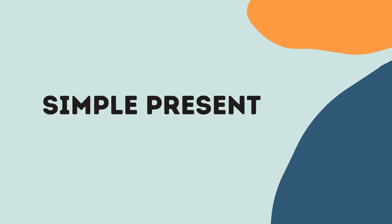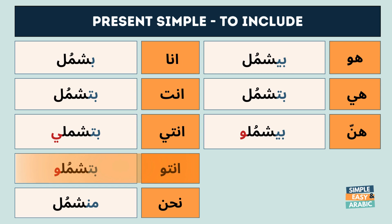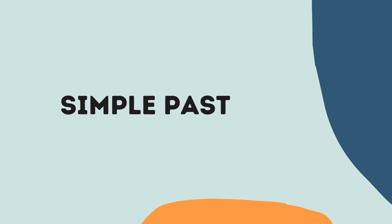Simple present: أنا بشمل، أنت بتشمل، أنت بتشملي، أنتو بتشملو، نحن منشمل، هو بيشمل، هي بتشمل، هنن بيشملو. Do you know how to conjugate the simple past?